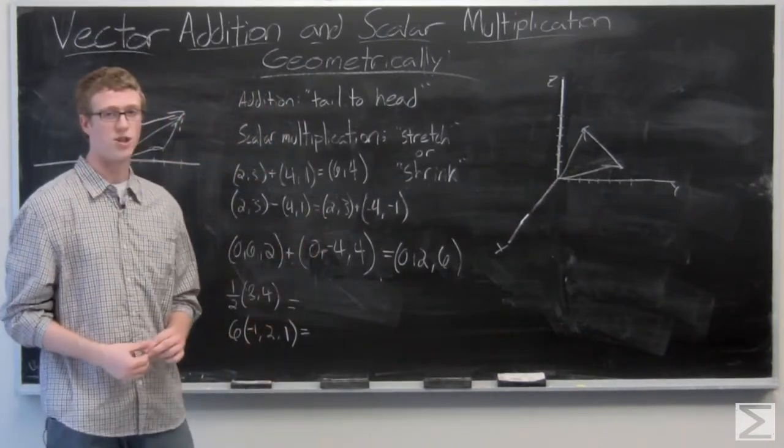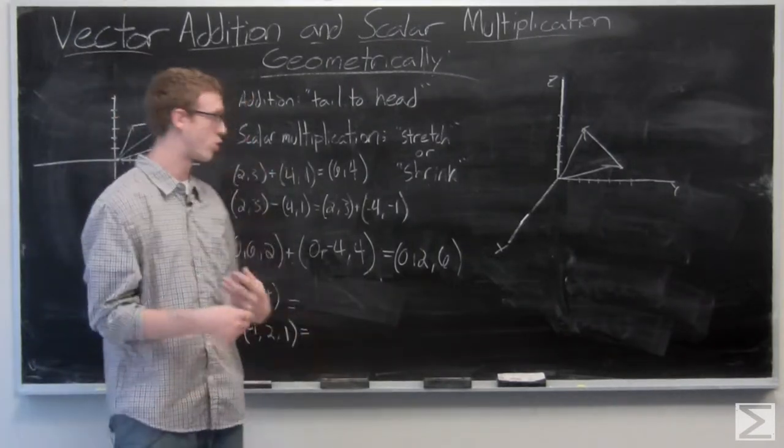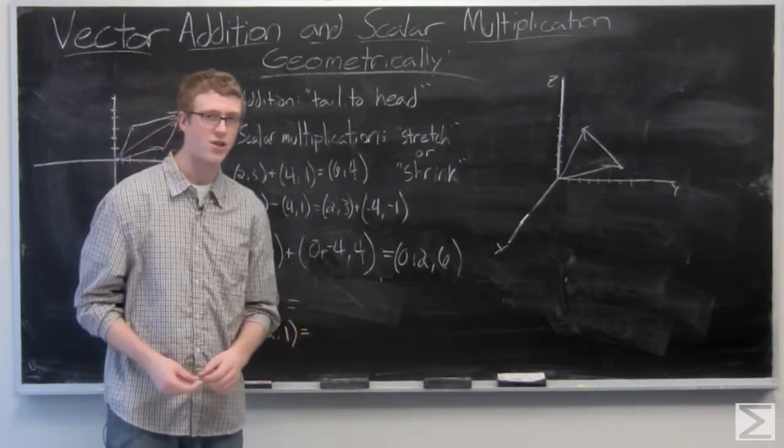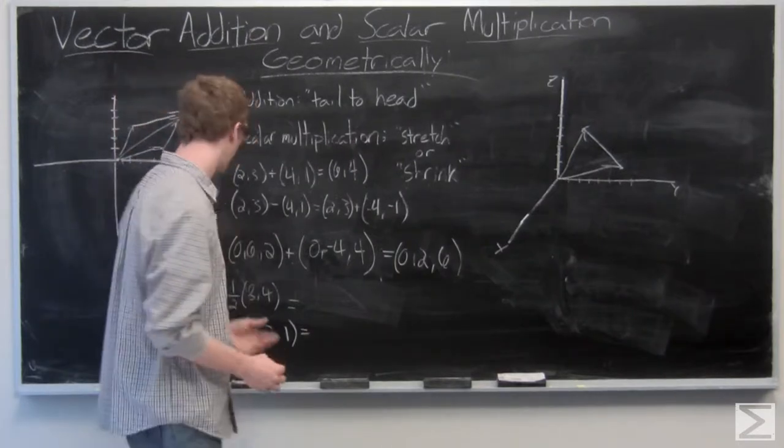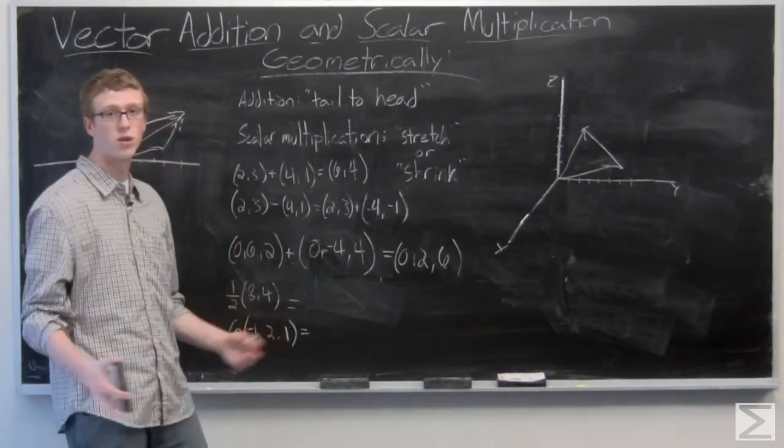Now we can take a look at the geometric interpretation of scalar multiplication. It's going to stretch or shrink your vector depending on if you're multiplying by a fractional scalar or if you're multiplying by a large scalar. So we're taking a look at 1/2 of (8,4) in 2-space.